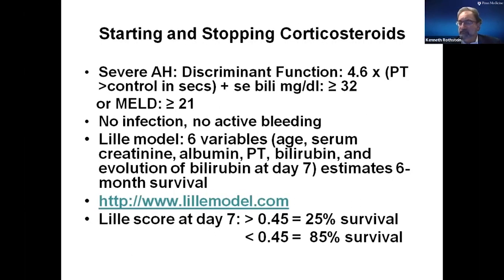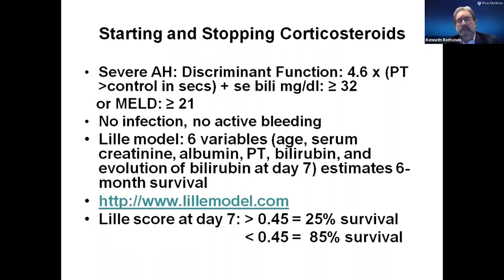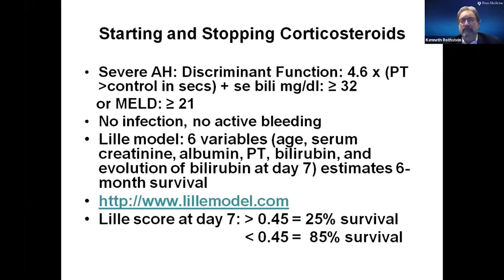Patients eligible for steroids must have a discriminant function over 32 — that is, the prothrombin time minus control in seconds times 4.6, plus the serum bilirubin — or a MELD greater than 21. We don't start steroids if they have active bleeding, infection, or renal failure. The Lille model at day seven tells you whether patients are going to survive. A score less than 0.45 corresponds to 85% survival, which is excellent. If the score is above 0.45, survival drops to 25%. Previously these patients did very poorly, but now we have the option of potentially doing a liver transplant even if they walk in drinking.